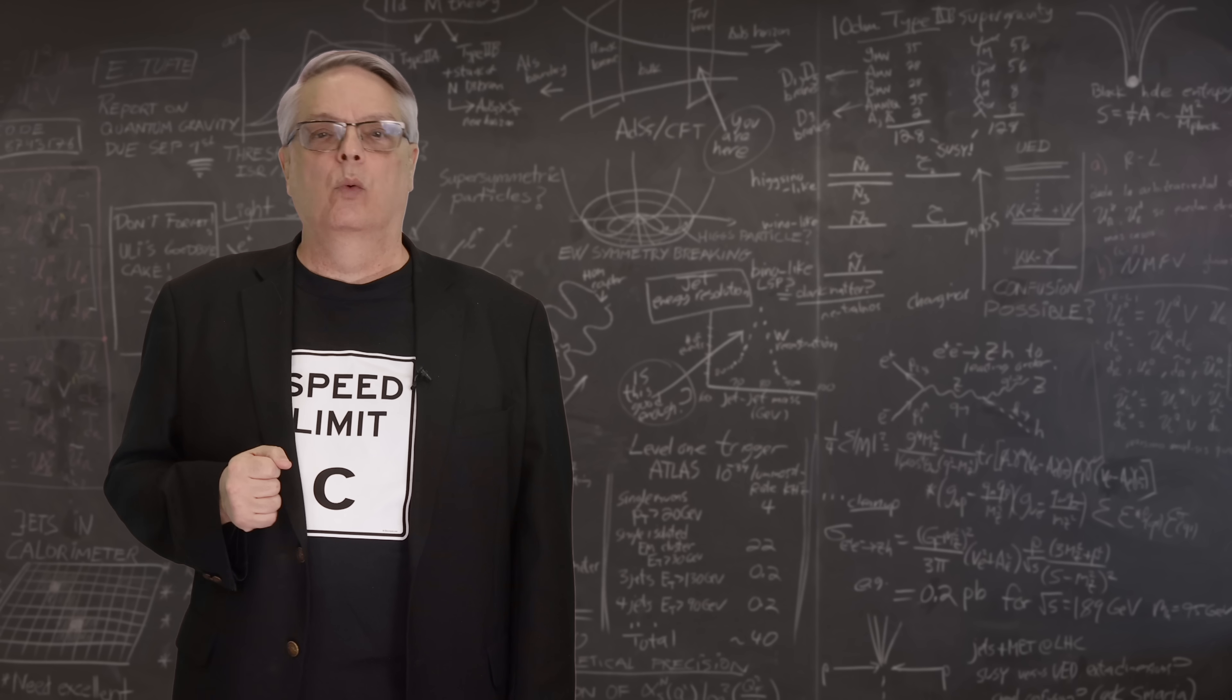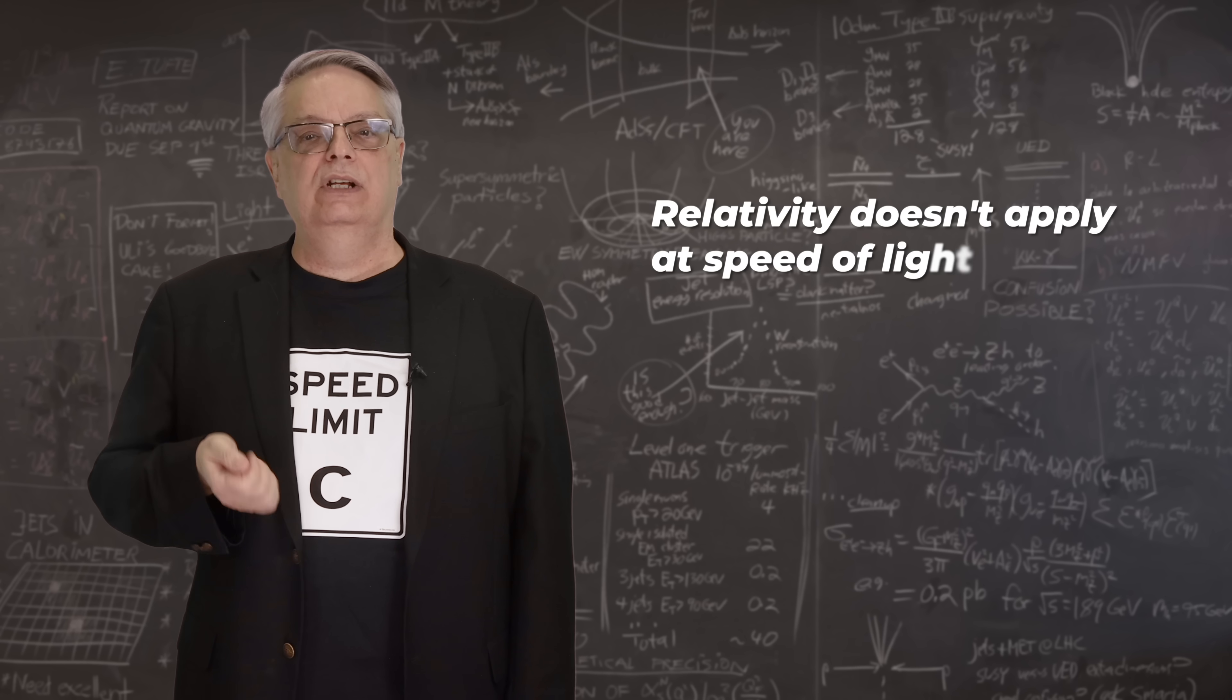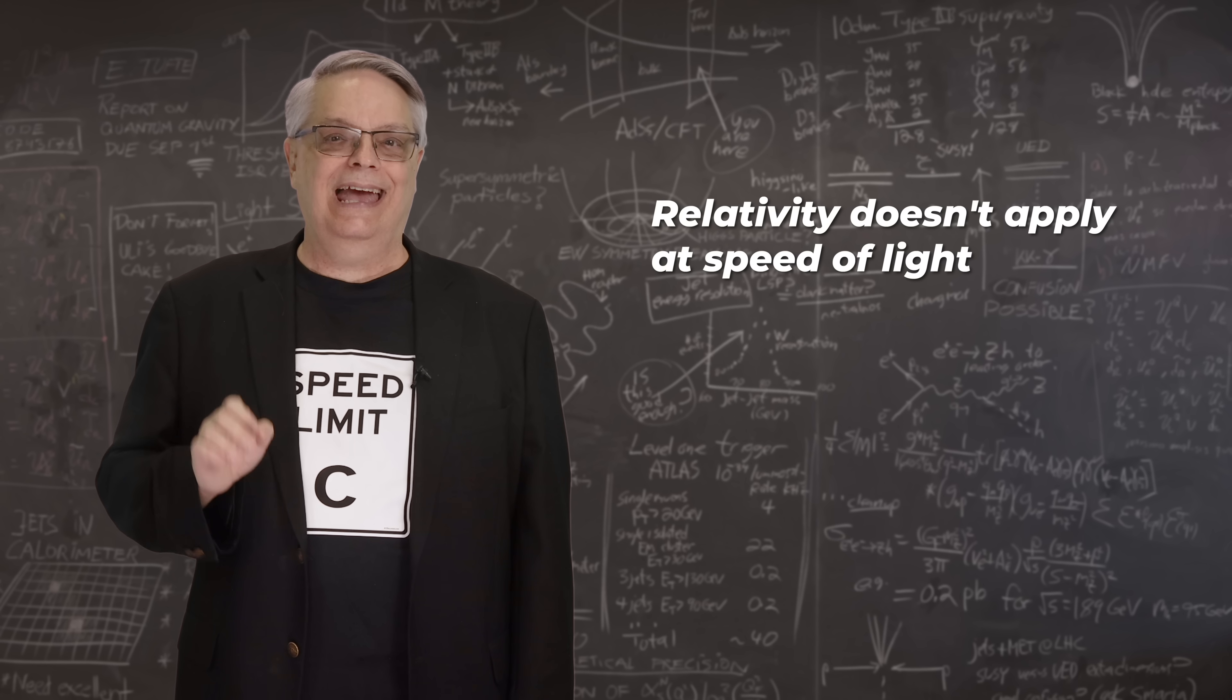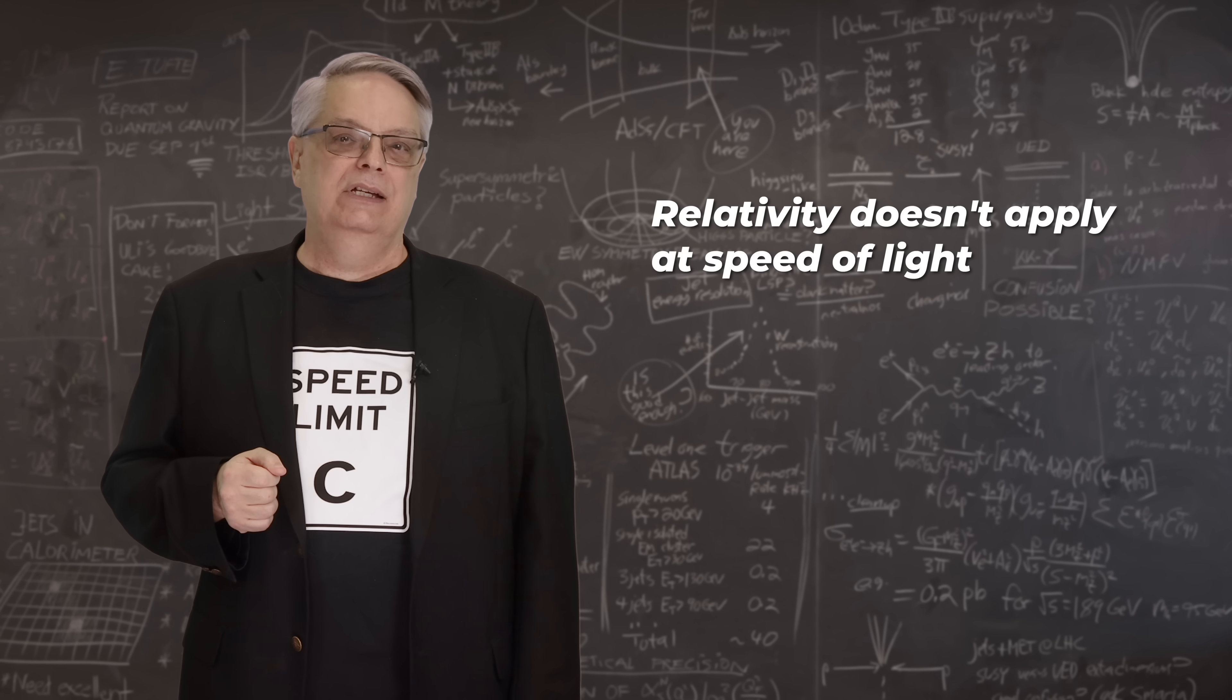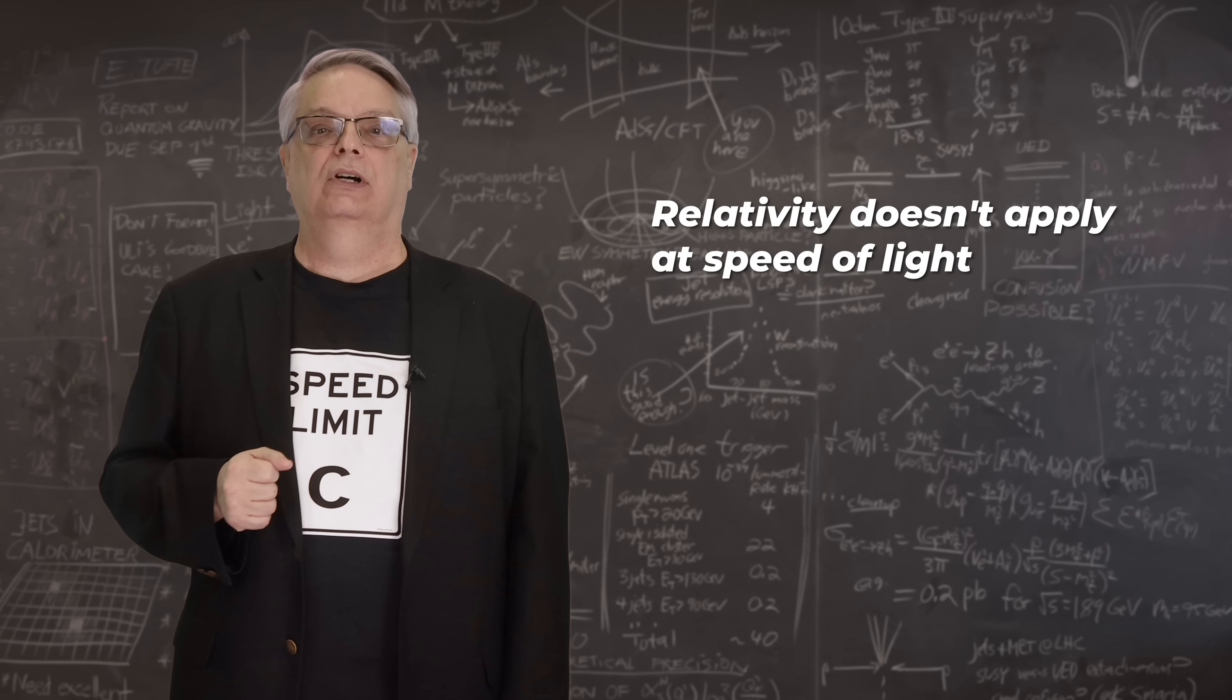So that's the key point number one. The equations of relativity don't work for objects traveling at the speed of light. That means that relativity theory also fails for photons.